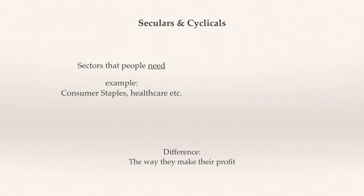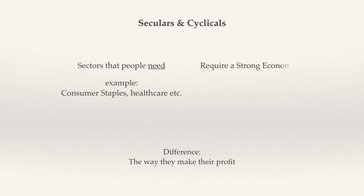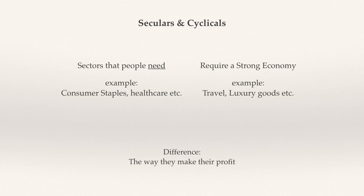Secular stocks represent services that people will always use, even during a weak economy. The opposite to these are cyclicals — sectors and companies that require a strong economy to thrive. Industries such as travel or luxury goods are some examples. During times of economic hardship, they tend to have decreased profits as people try to cut down on unnecessary expenses.